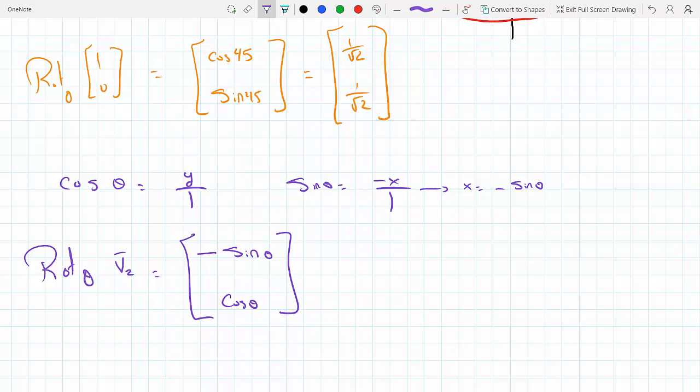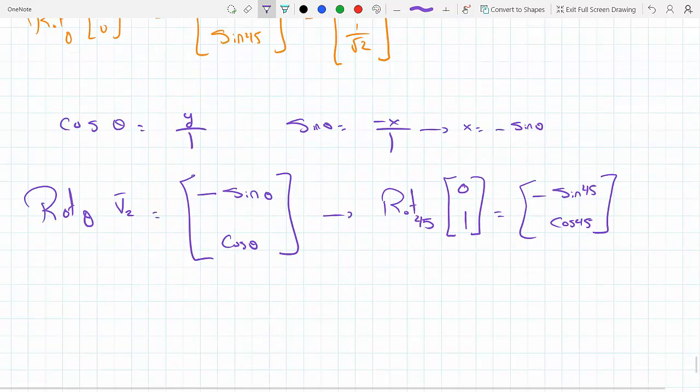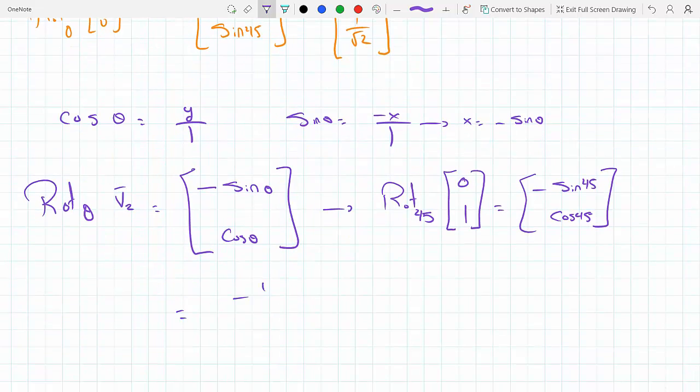So now filling in for the specific case where theta is 45 degrees, I would get the rotation matrix for 45 degrees of component zero one, or a vector zero one. That would be minus sine 45 and cosine 45, which would effectively give me minus one over root two and one over root two.